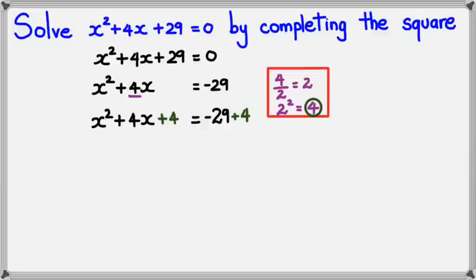Now, what I could do is I can see that x² + 4x + 4 could be factorized as (x + 2)². And on the right-hand side, -29 + 4 = -25.